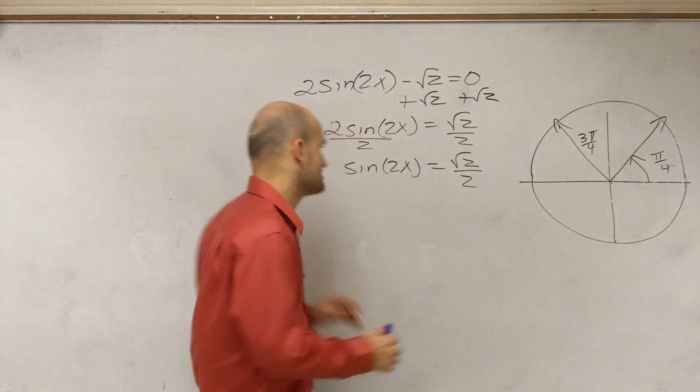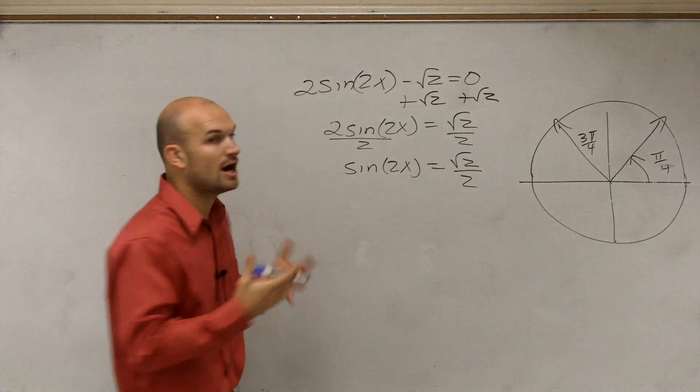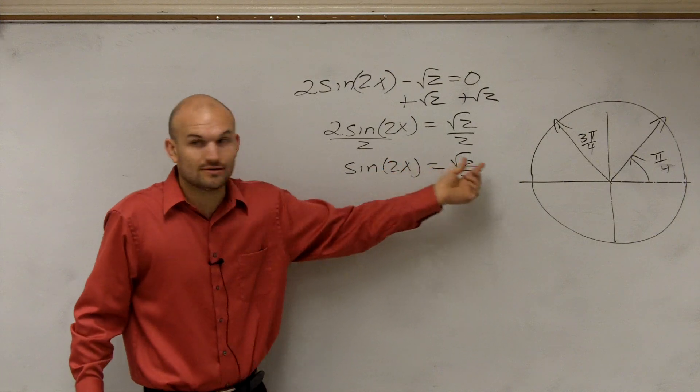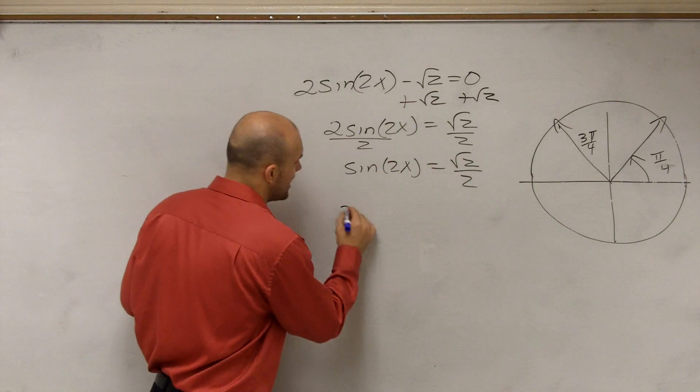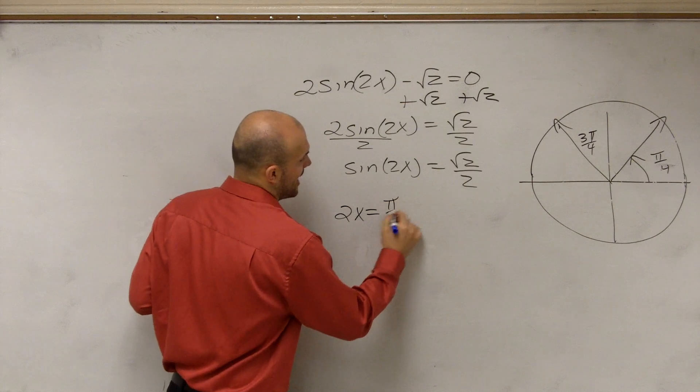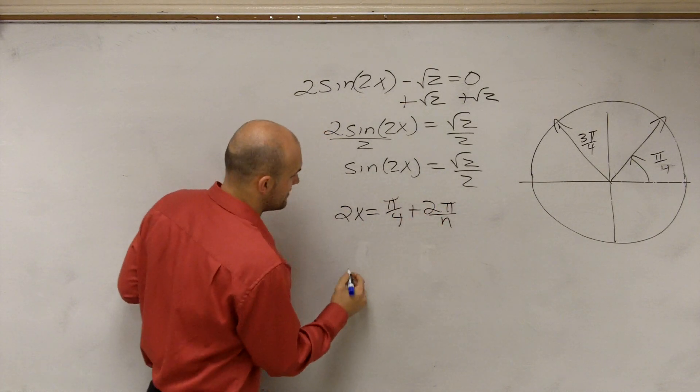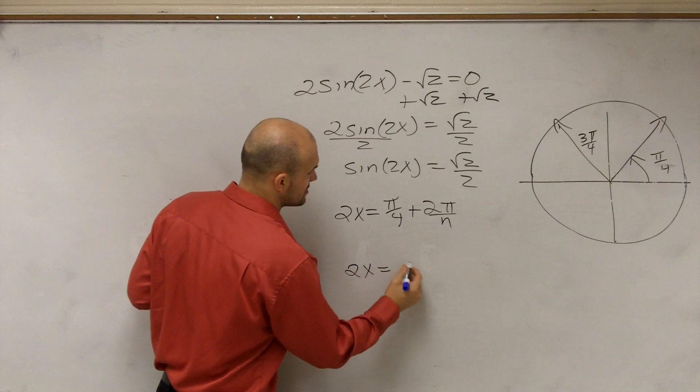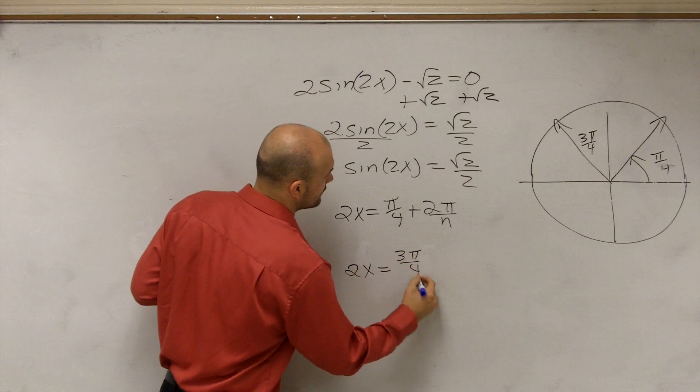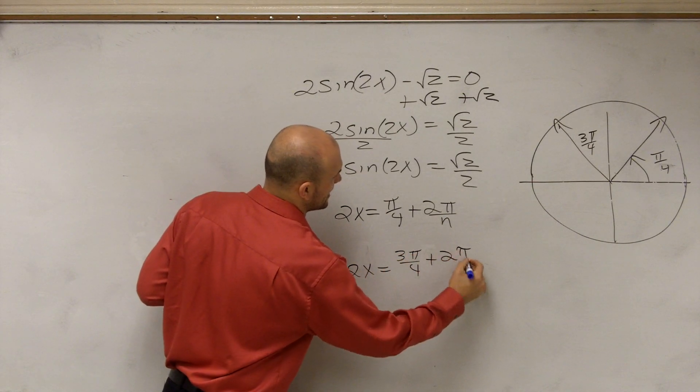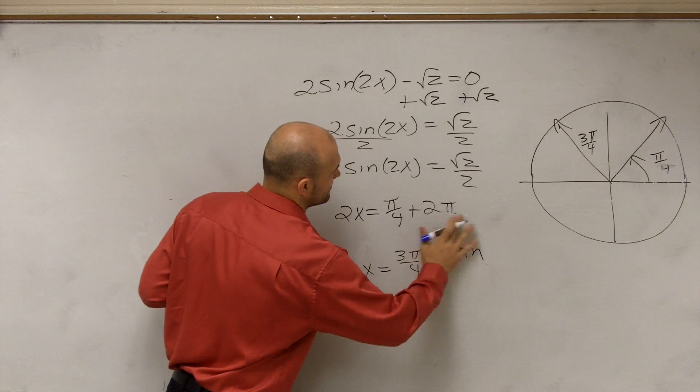I showed you, I explained that last time. So now, rather than saying x equals that, now 2x equals pi over 4 plus 2 pi n. And now 2x equals 3 pi over 4 plus 2 pi n, not divided by n.